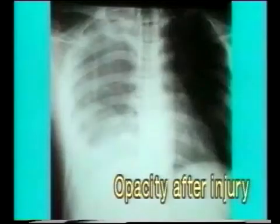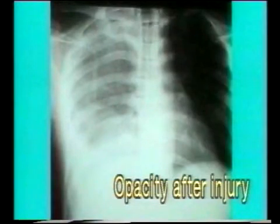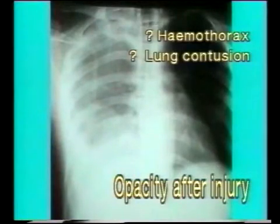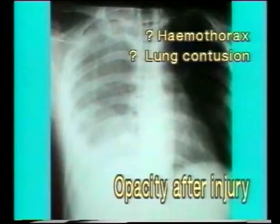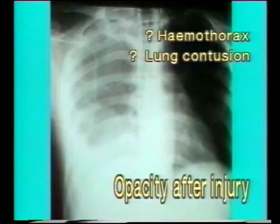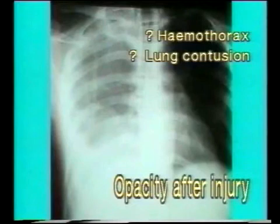This X-ray, taken in the lying-down position after a chest injury, shows opacification of the right lung with obliteration of the costophrenic angle. Either a hemothorax or a lung contusion may result in opacification of the lung. Uniform opacification of the whole side, more prominent in the costophrenic angle, suggests a hemothorax, while in the standing position this would give a shadow akin to a pleural effusion.